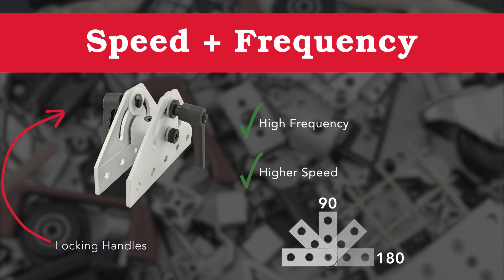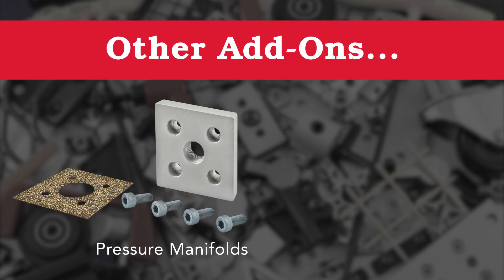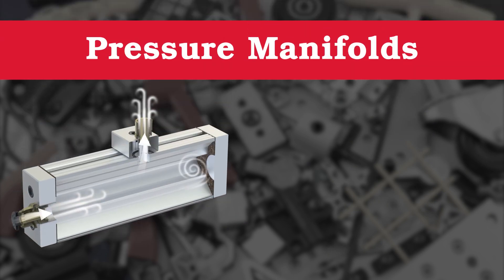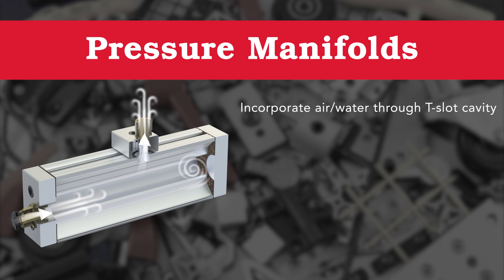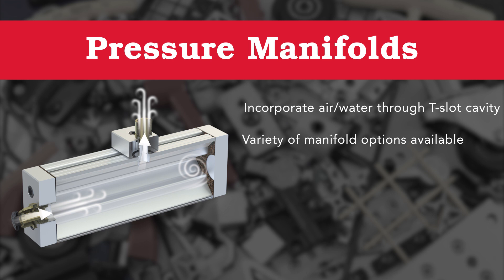Along with motion components, 8020 also offers other add-on components such as pressure manifolds and stanchions. Pressure manifolds allow you to add a pressurized substance, such as liquids or air, into the center cavity of a T-slot profile. 8020 offers a range of access, feed, and stopper plates to suit your structure.